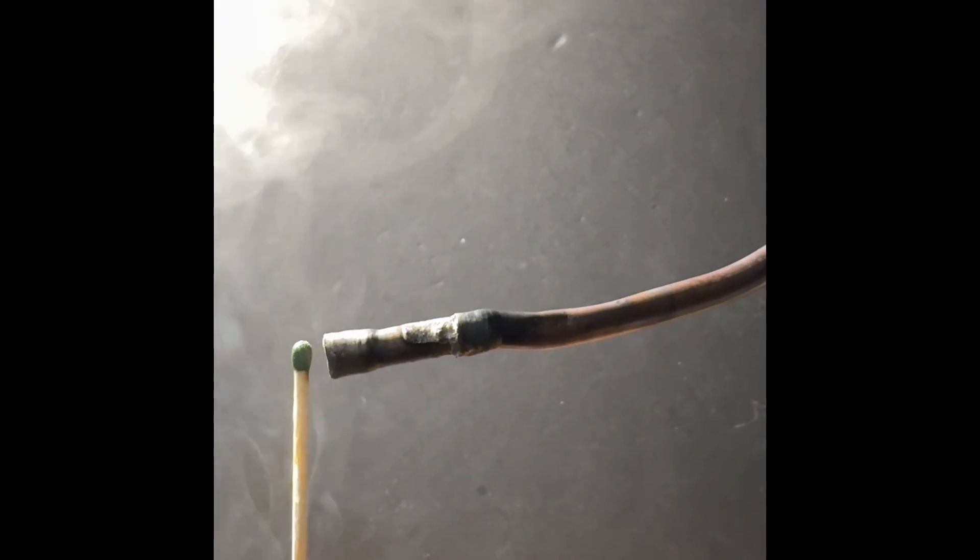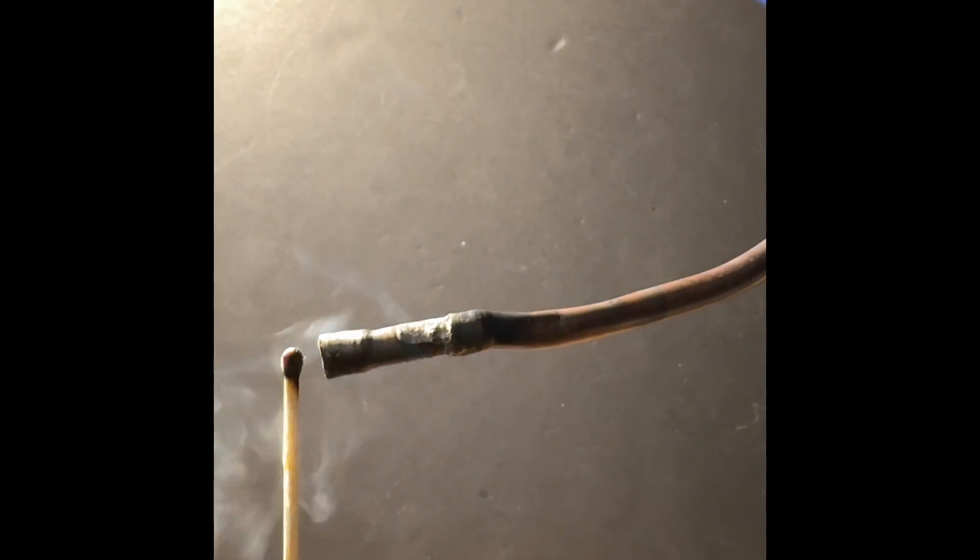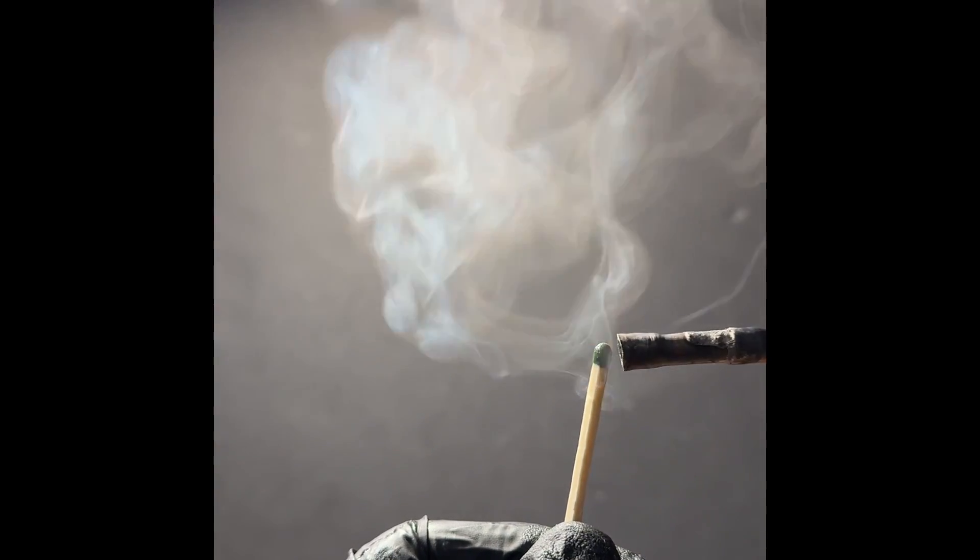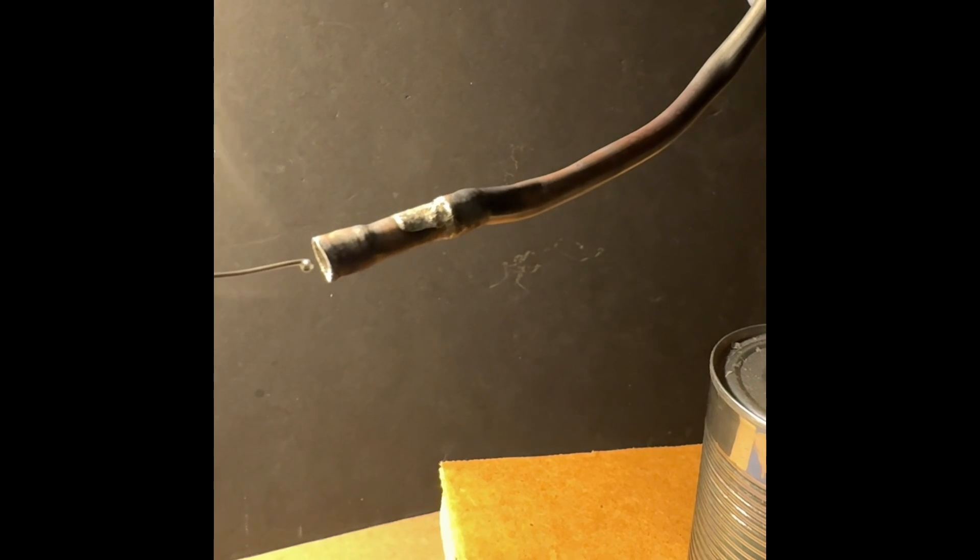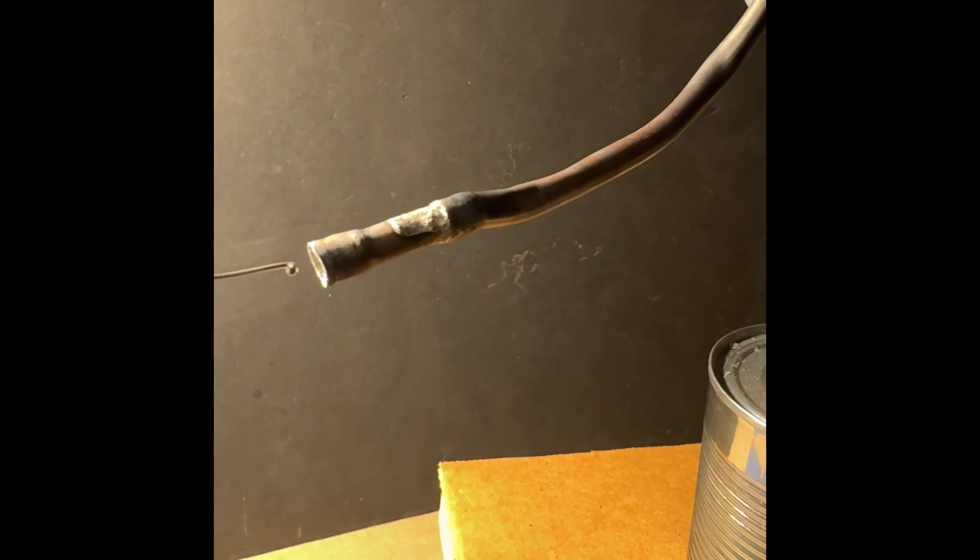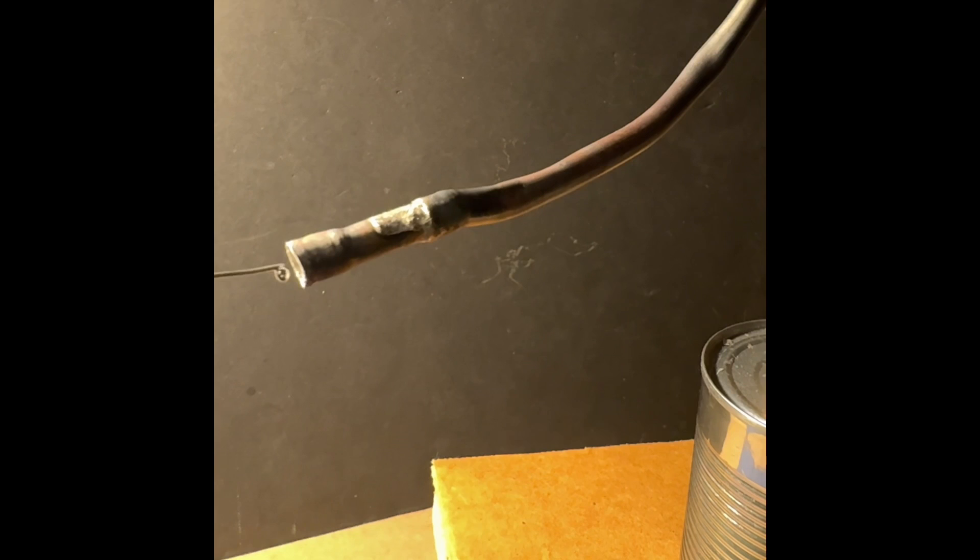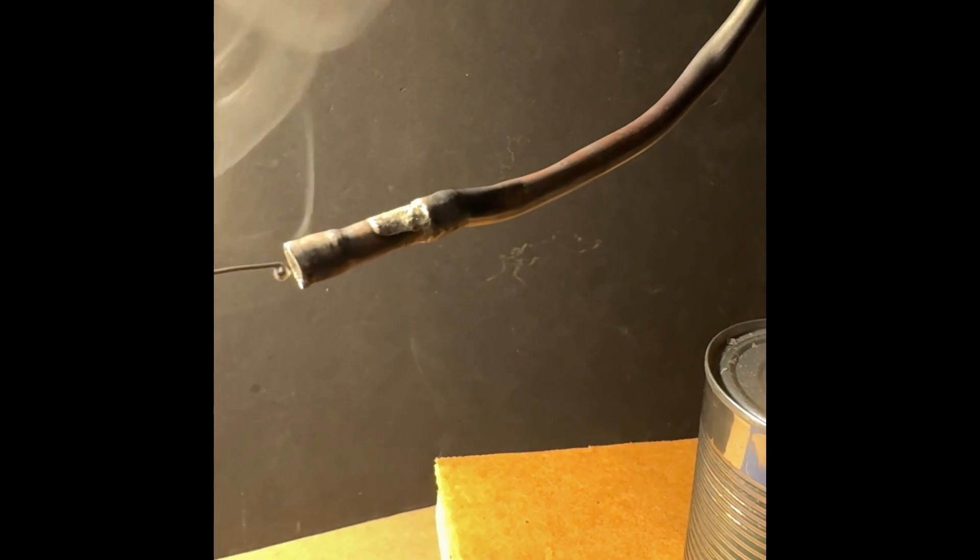As you can see here, it easily lights matches. The problem in my last video was the match was too near to the copper pipe. Now I'm going to melt lead-free solder, which melts above 220 degrees Celsius. As you can see here it is.